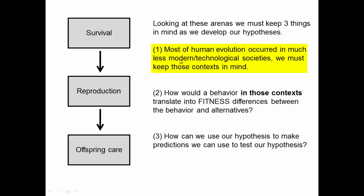We also want to keep in mind that most of human evolution occurred in a much less modern or technological society. If we're thinking about whether a certain behavior would be advantageous, it doesn't make sense to think about it in modern society. It makes more sense to think about whether it would have been advantageous a hundred thousand, five hundred thousand, or a million years ago — in that sort of technology and social structure.